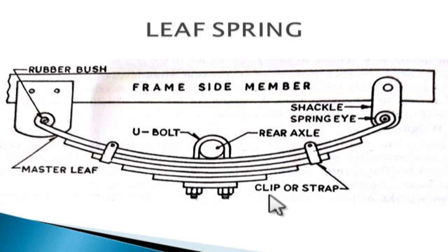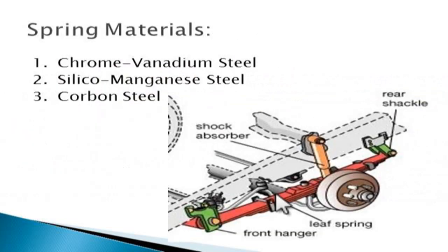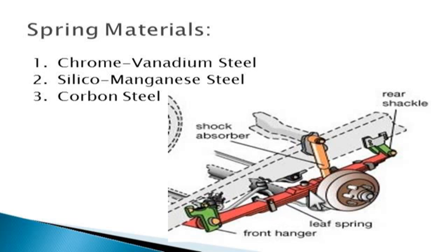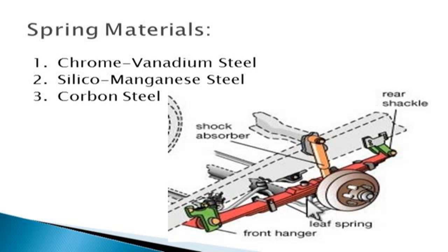When the vehicle comes across a projection on the road surface, the wheel moves up, deflecting the spring. This changes the length between the shackle and fixed point to accommodate the vibration. When the leaf spring deflects, the upper side of each leaf slides or rubs against the other. This produces some damping which reduces the vibration.